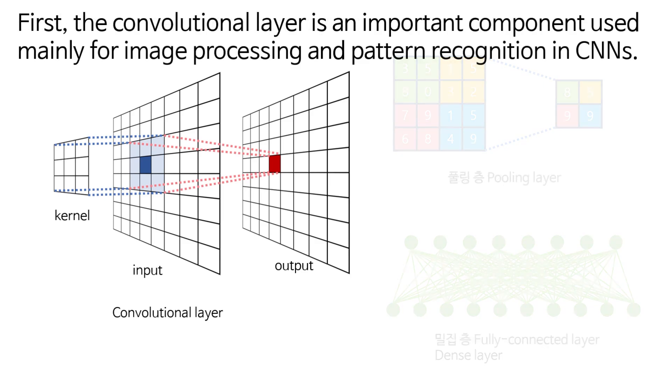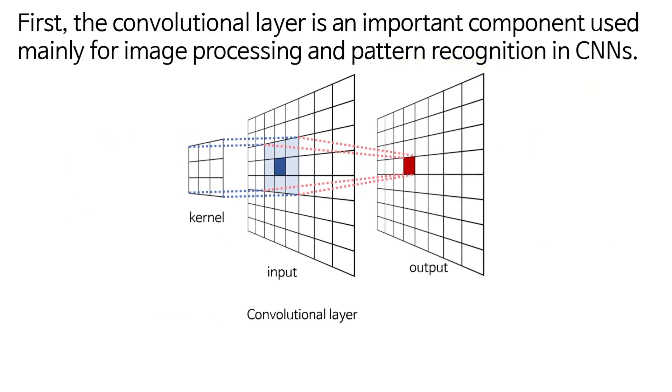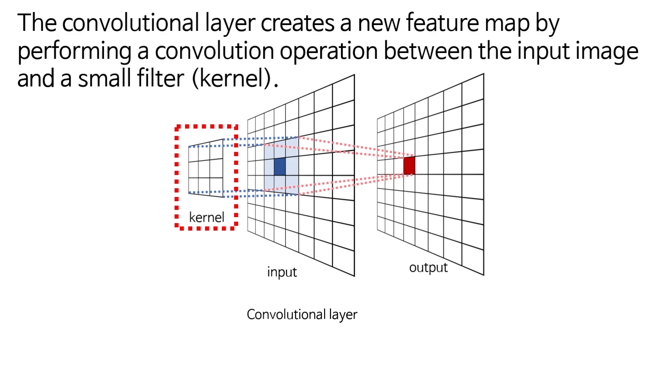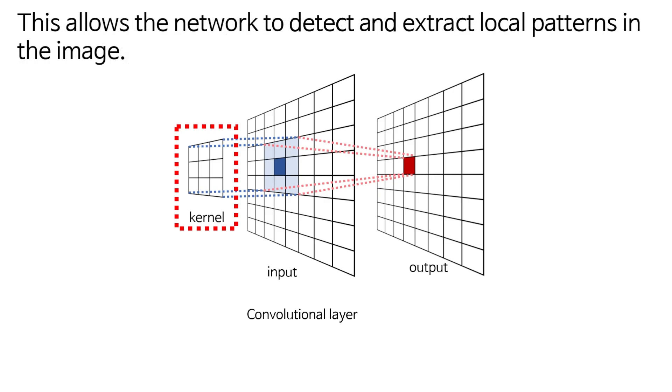First, the convolutional layer is an important component used mainly for image processing and pattern recognition in CNNs. The convolutional layer creates a new feature map by performing a convolution operation between the input image and a small filter, which is called a kernel.